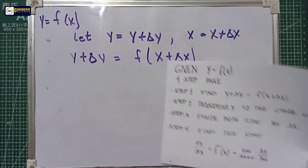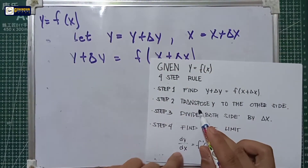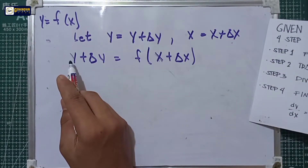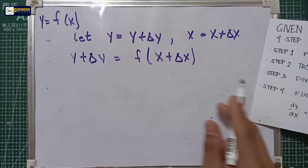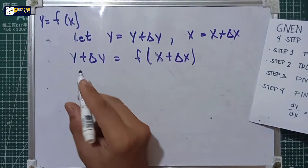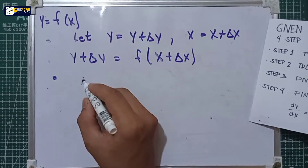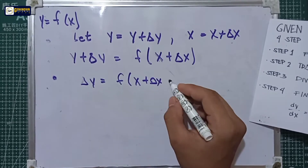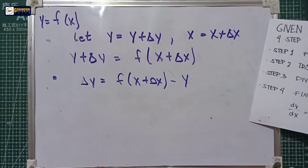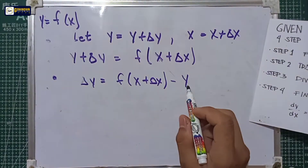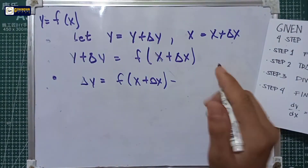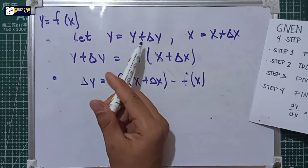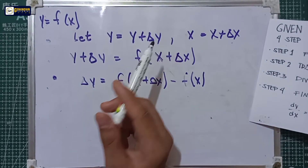In step two, transpose y to the other side. When we transpose the y, since it is positive, it becomes negative. So delta y is equal to the function of x plus delta x minus y. Here we also apply the substitution, since our y is equal to f of x, we will also replace that. Take note that y equals y plus delta x is only applicable in step number one.